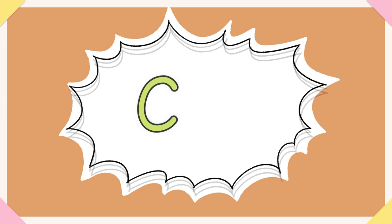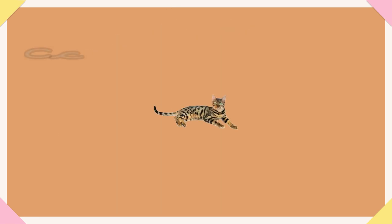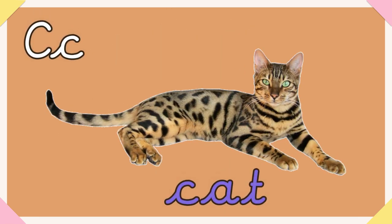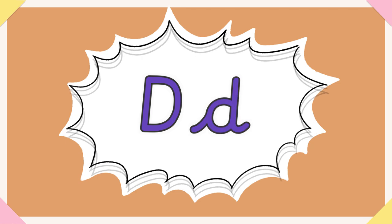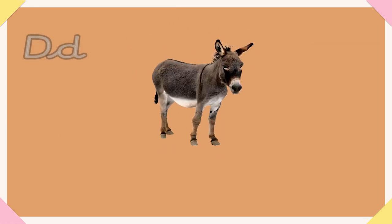The name is C and the sound is C. C for cat. The name is D and the sound is D. D for donkey.